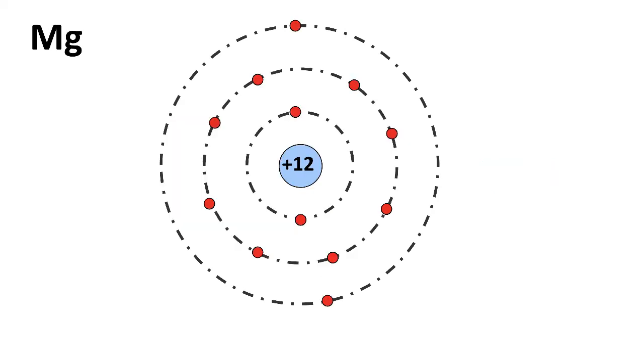Now let's try the next element over, magnesium. Let's do the same thing. This time we have two valence electrons, and imagine you're the valence electrons for magnesium. What we have is now 12 protons in the nucleus, still have 10 inner shell electrons, but now two outer shell electrons.